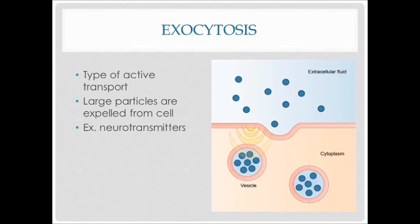With endocytosis — endo means within — so we're bringing things into the cell. Exocytosis — exo means out — so we're taking things and transporting them out of the cell. It's also a type of active transport, doing exactly the opposite of endocytosis. Large particles are expelled from the cell; an example is neurotransmitters. At the end of each neuron, there's a synaptic bulb containing neurotransmitters, which are chemicals that communicate with other cells — sometimes other neurons, sometimes muscle cells or other cell types — to create a specific function.